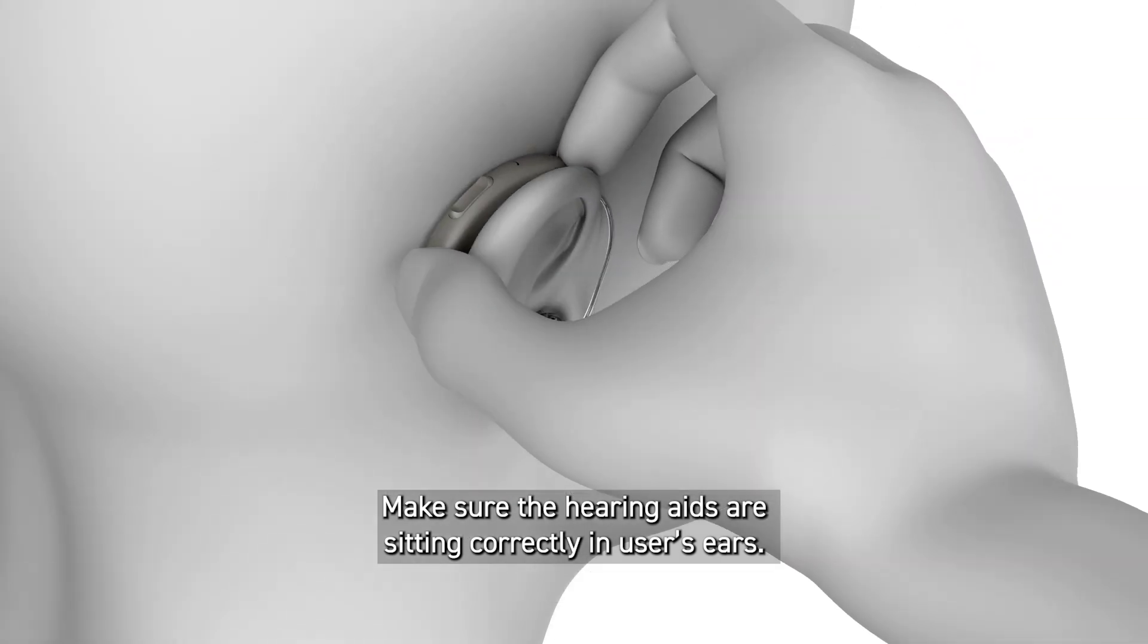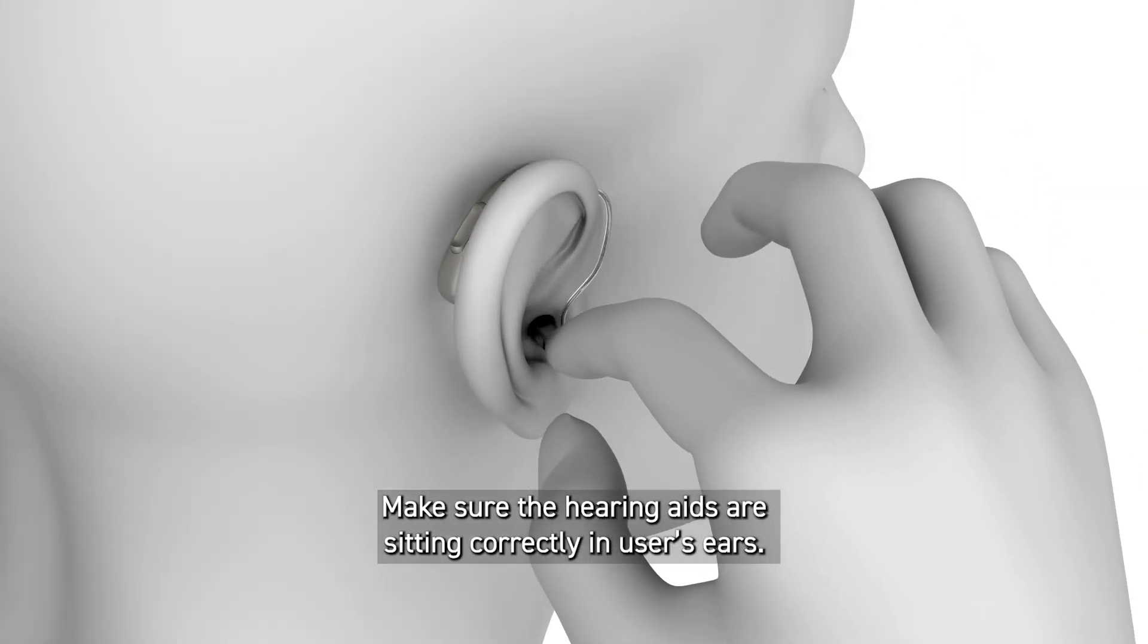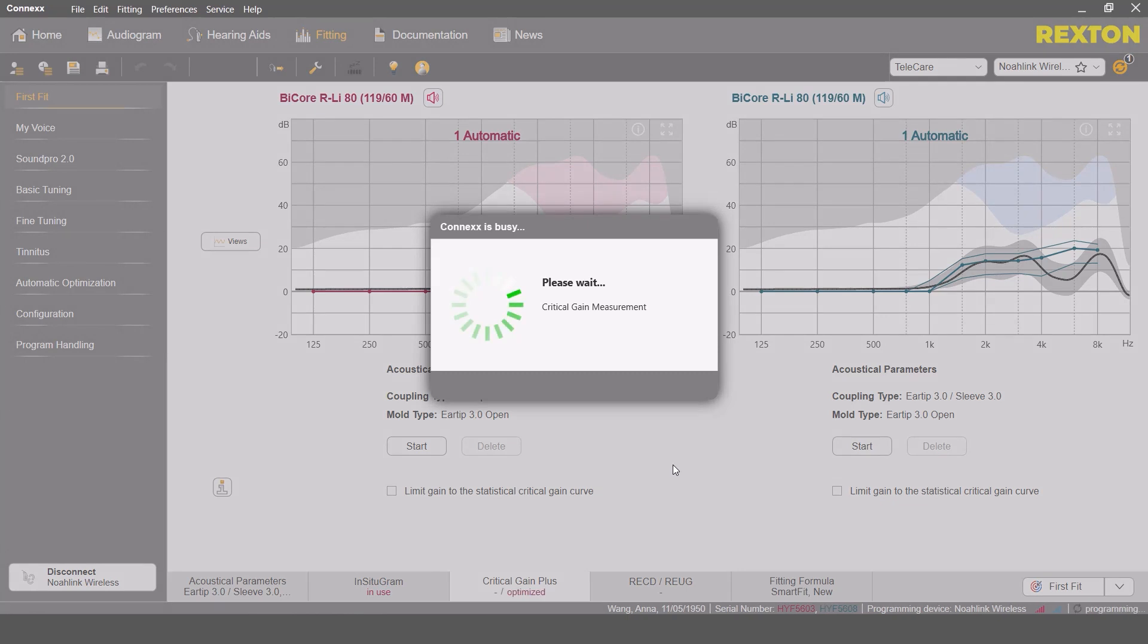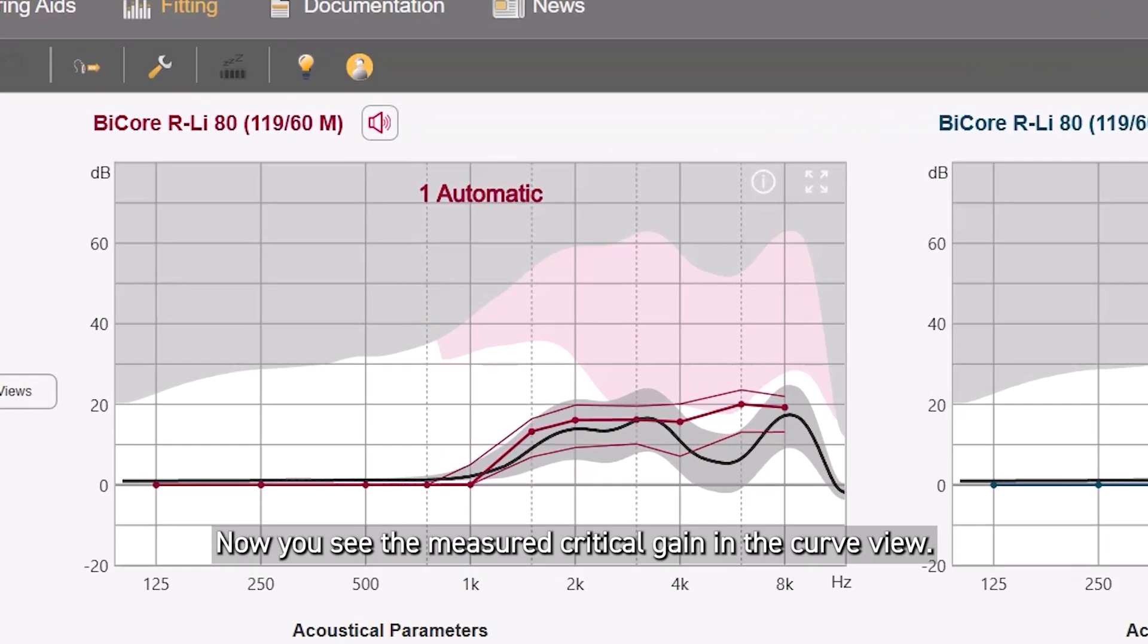Make sure the hearing aids are sitting correctly in users' ears. Click on Start to conduct the measurement on the desired ear. Now you can see the measured critical gain in the curve view.